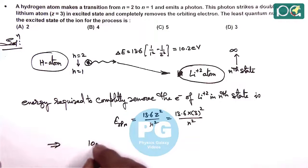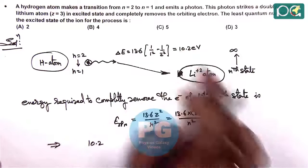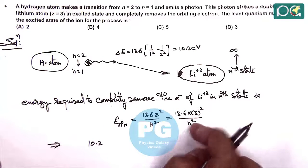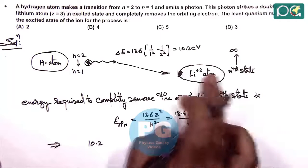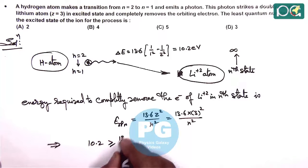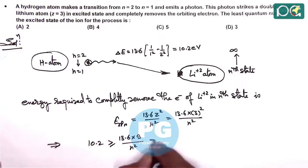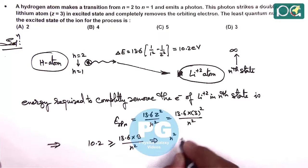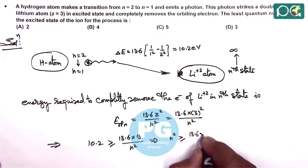We can write: 10.2 eV must be greater than or equal to this ionization energy, then only the nth state lithium atom will get ionized. So 10.2 ≥ 13.6 × 9/n². This gives us n² ≥ 13.6 × 9/10.2.